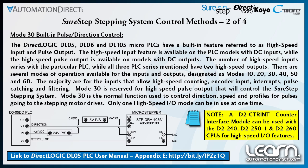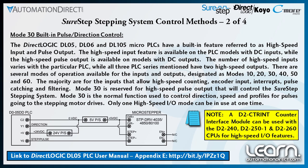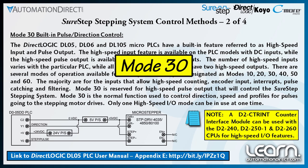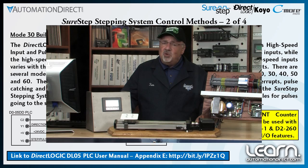The number of high speed inputs varies with the particular PLC, while all three PLC series mentioned have two high speed outputs. The modes of operation available for the inputs and outputs are programmed and designated as modes 10, 20, 30, 40, 50, and 60. Mode 30 is used to provide the pulse and directional signals from the PLC that would be used by the SureStep stepping system. Also be aware that only one of the modes can be in use at a time.